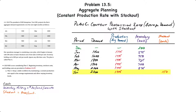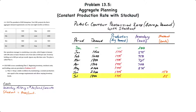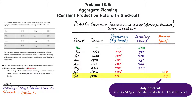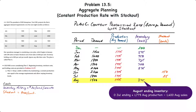In June, however, demand is still 2,200, but with production at 1,775, we're short 150 units — that's 275 in beginning inventory plus 1,775 produced minus 2,200. In July, production is 1,775 and demand is 1,800. There is no beginning inventory to draw from, so the company will stock out by 25 units. And then August, with 1,400 demanded and 1,775 produced, this will result in ending inventory of 375 units.